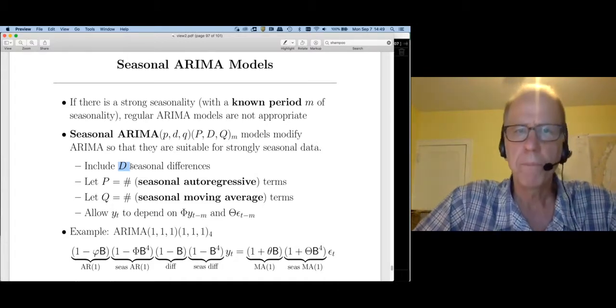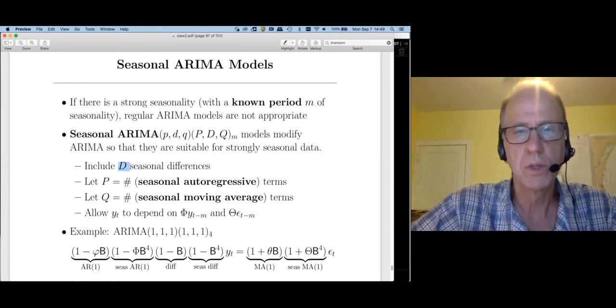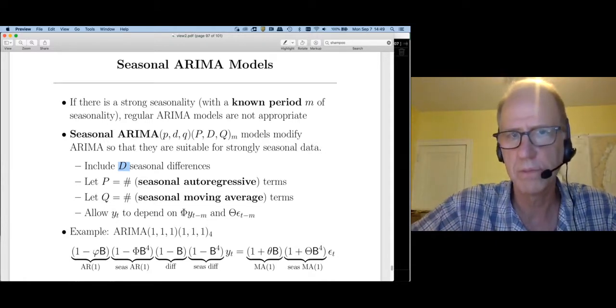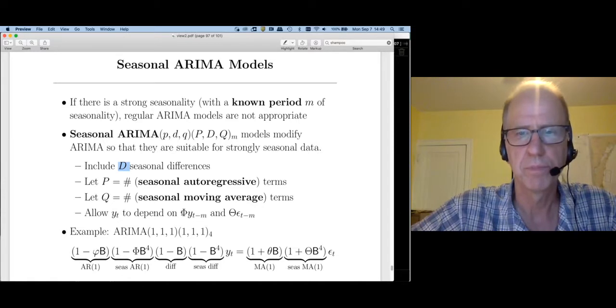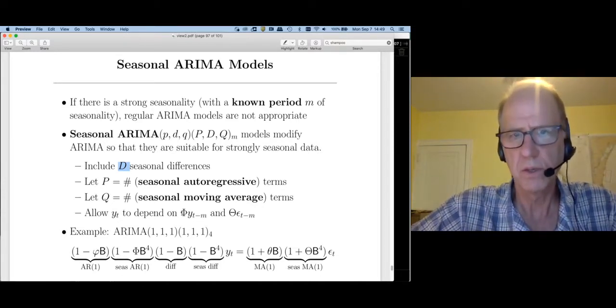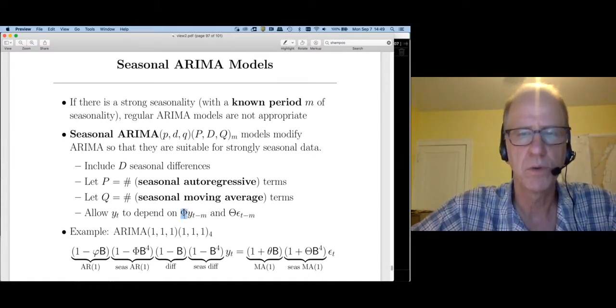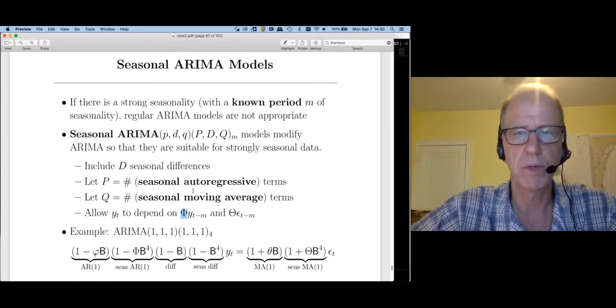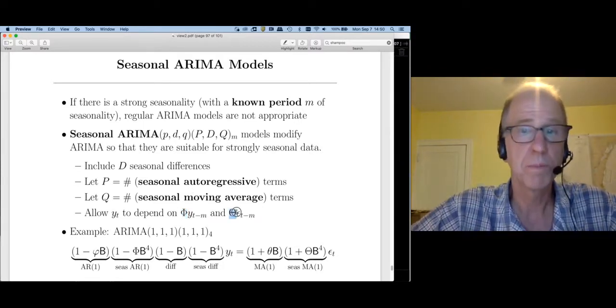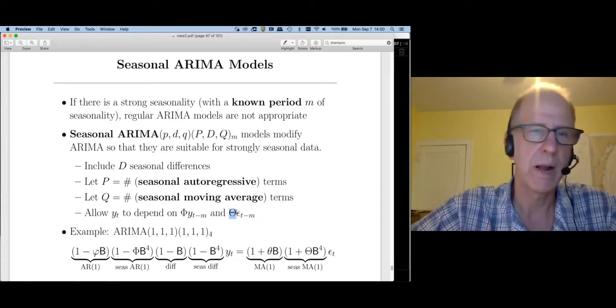One more thing. Back with basic ARIMA models we used little phi to indicate the parameters for the autoregressive terms and little theta for the moving average parameters. For seasonal ARIMA we're going to use a capital phi for all of our seasonal autoregressive parameters, and we're going to use big thetas to indicate our seasonal moving average parameters.